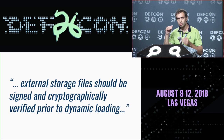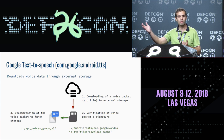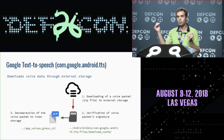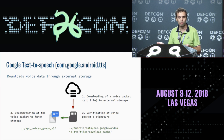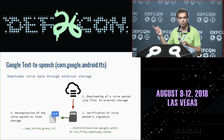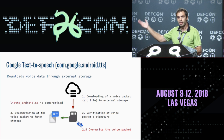Another excerpt: 'You should sign and verify the signature of all files located in external storage.' Google Text-to-Speech — on all phones in the world — downloads a voice packet archive to external storage, verifies the signature, and decompresses the files to internal storage. It looks nice — we have signature verification. However, the second and third parts of the algorithm are not atomic actions. This means an attacker can overwrite the file after verification but before decompression, putting the internal native library under attack.